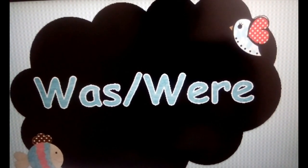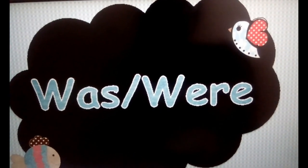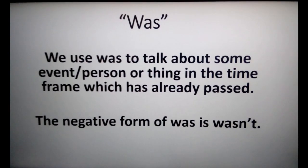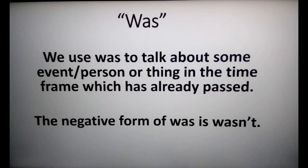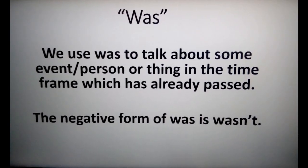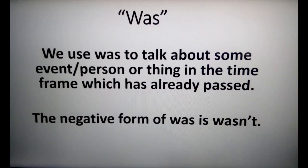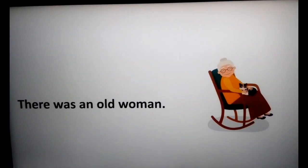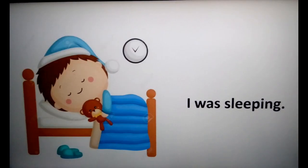These sentences are the past form of the verb. They may be used as main verbs or helping verbs. We use 'was' to talk about some event, person, or thing in a time frame that has already passed. The negative form of 'was' is 'wasn't' — 'wasn't' is the contraction of 'was not'. Example: 'There was an old woman.' 'I was sleeping.'